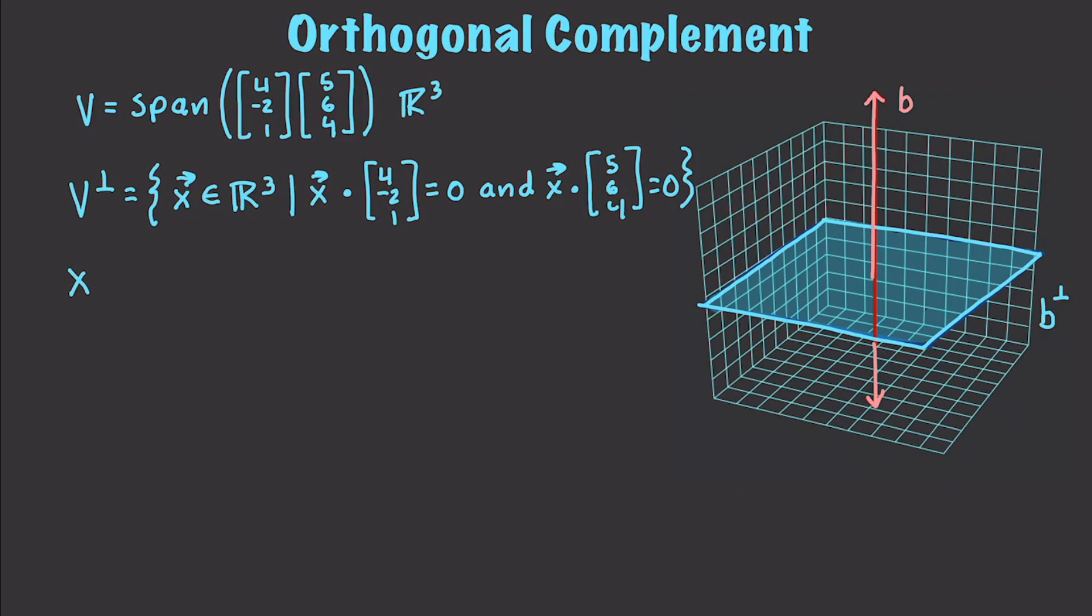And we can come in here and represent X here as X1, X2, and X3, which if we go and get these values, this becomes 4X1 minus 2X2 plus X3 is equal to 0. And 5X1 plus 6X2 plus 4X3 is equal to 0. Well, we can put this into a matrix. So, let's make this 4, negative 2, 1, 5, 6, 4, and 0's.